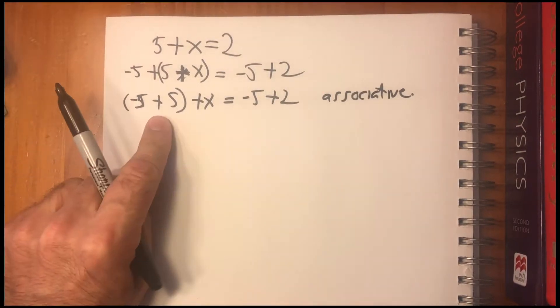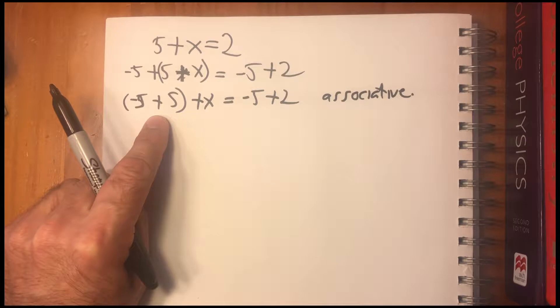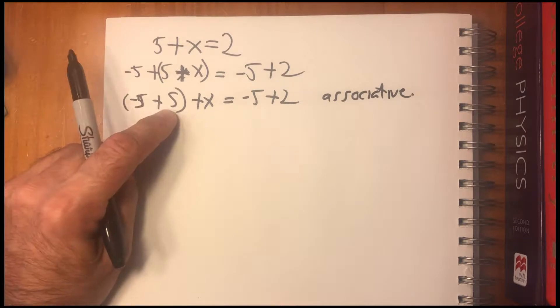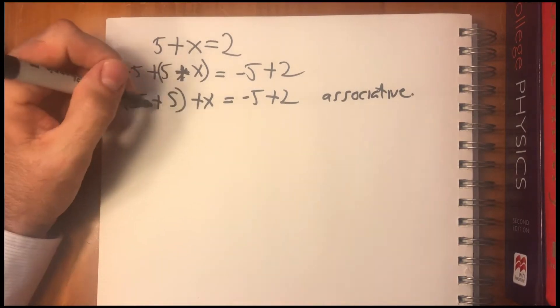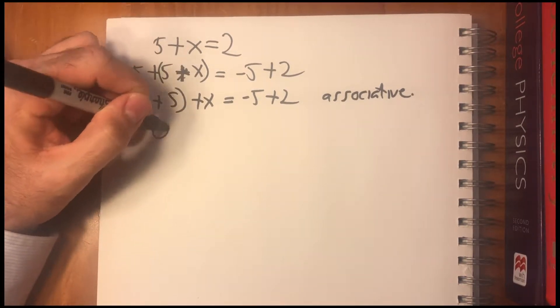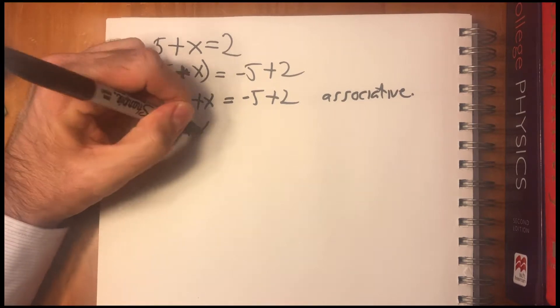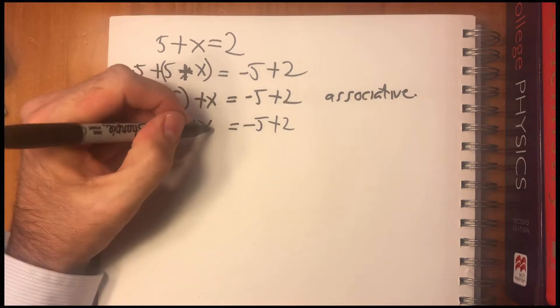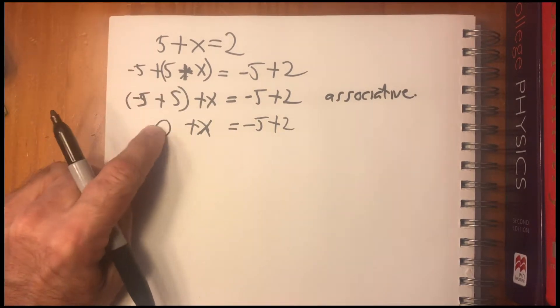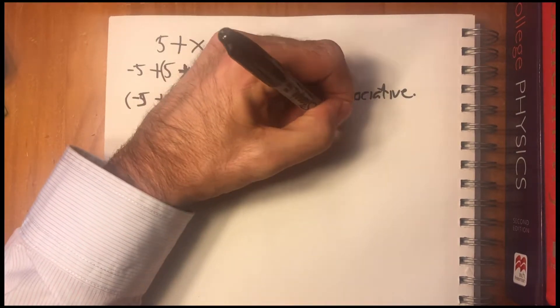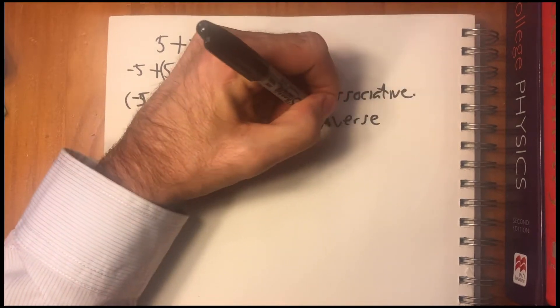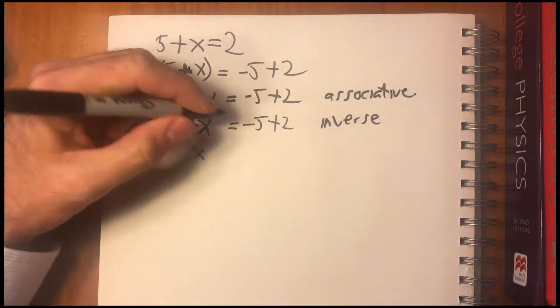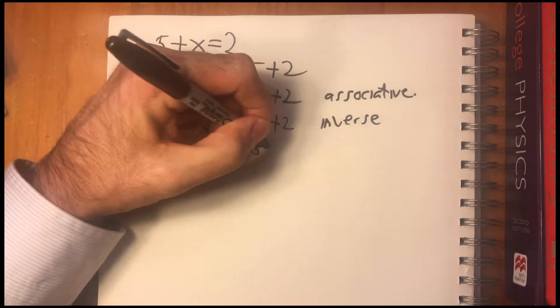And then minus five is the inverse of... minus five is the inverse of five. What's that mean? That means that it equals zero plus x equals minus five plus two. So that's the inverse property.